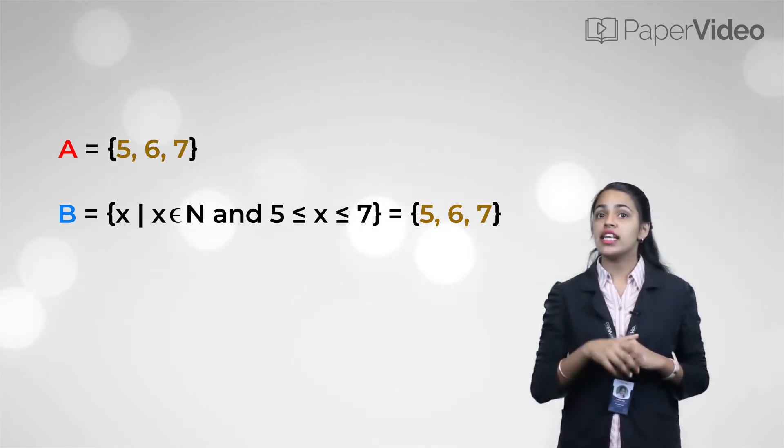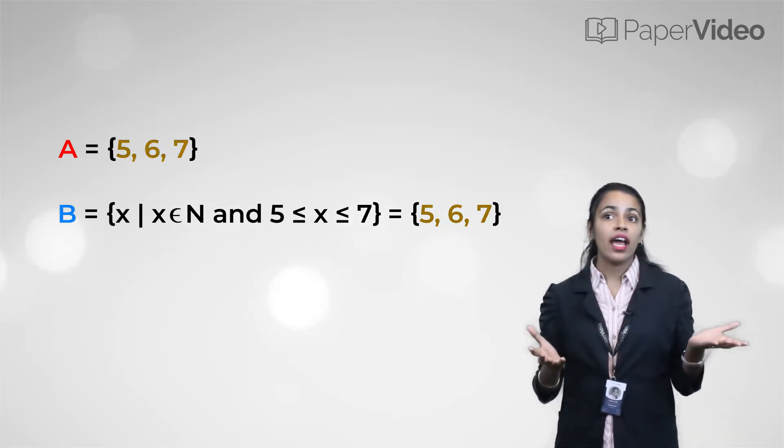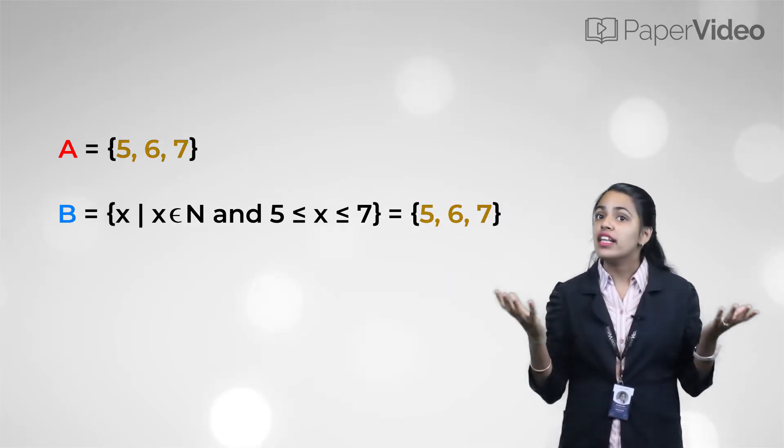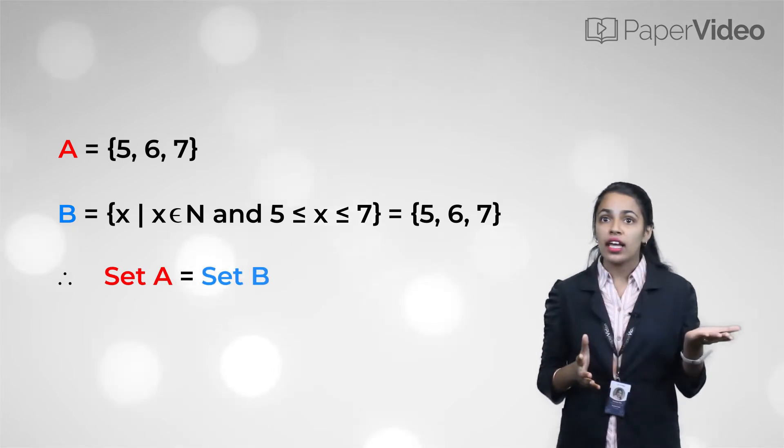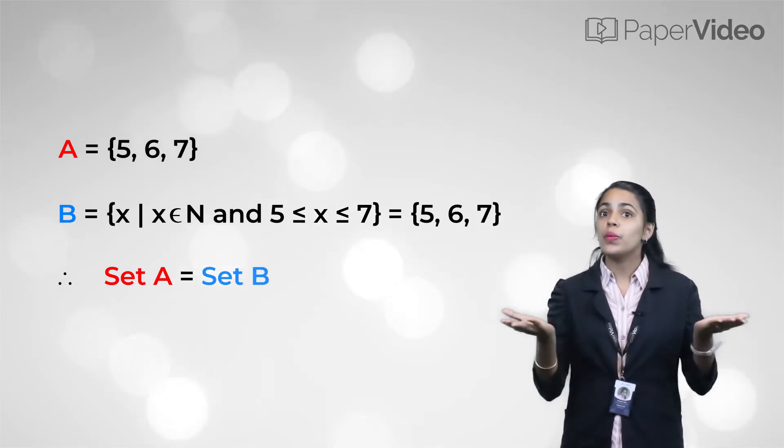Clearly, we can see that both sets A and B have identical elements. Therefore, we can say that set A and set B are equal sets.